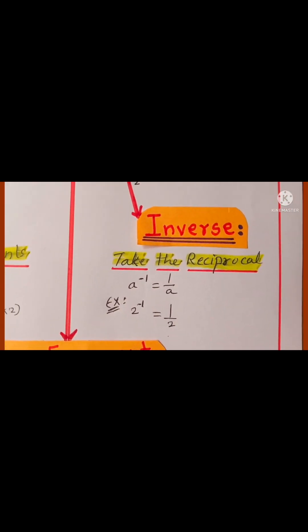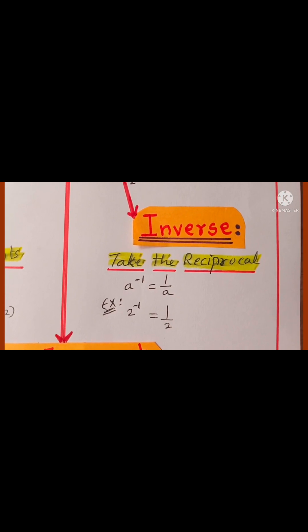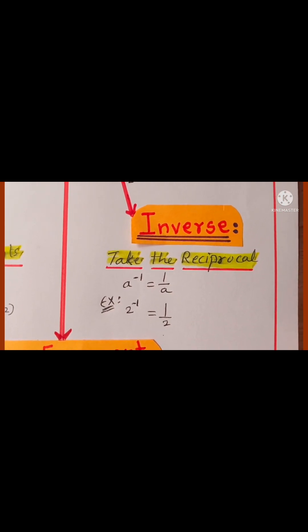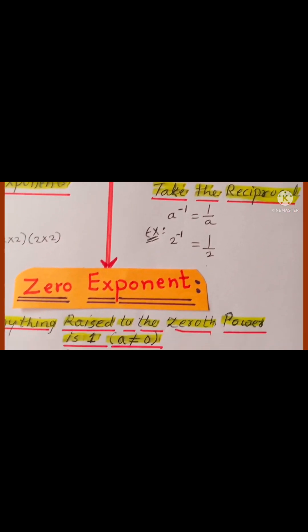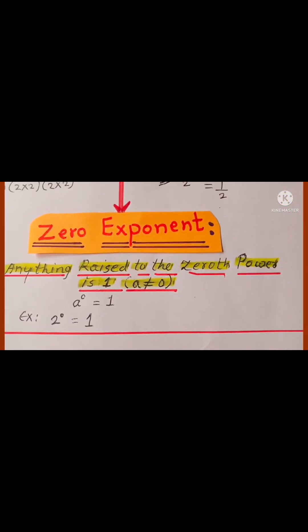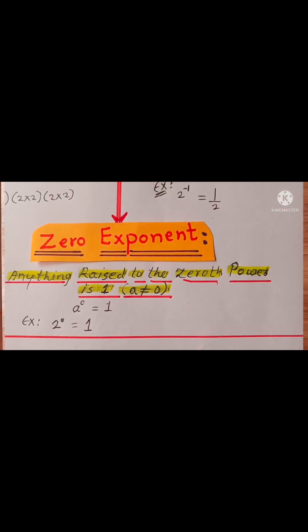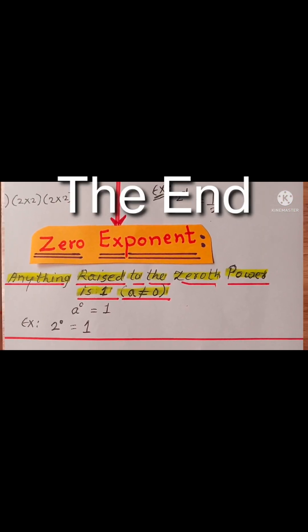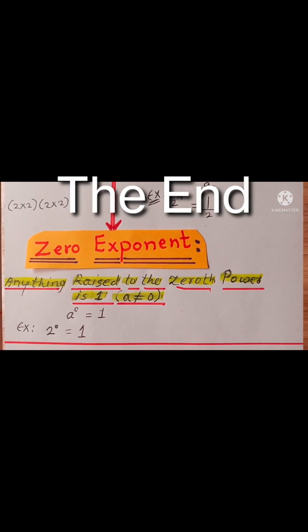The fourth rule is the inverse, which means we have to take the reciprocal. The fifth rule is the zero exponent rule — anything raised to the zero power is one.